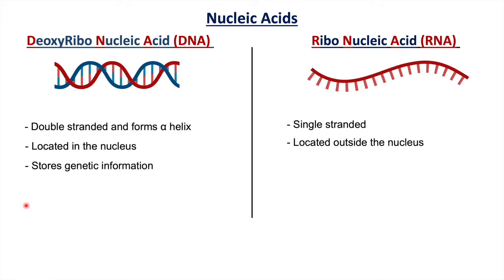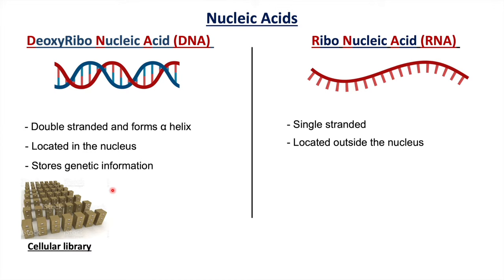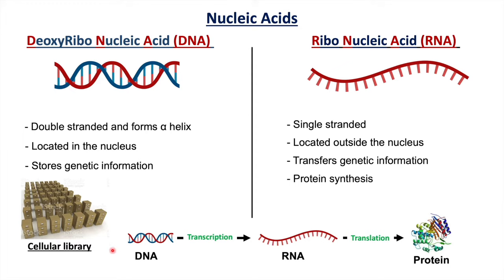DNA is important in storing genetic information — it acts like a cellular library — whereas RNA is important for transferring genetic information as well as in protein synthesis. Basically, the genetic information flows from DNA to RNA to proteins: DNA is transcribed into RNA, and then RNA is eventually translated into protein synthesis.